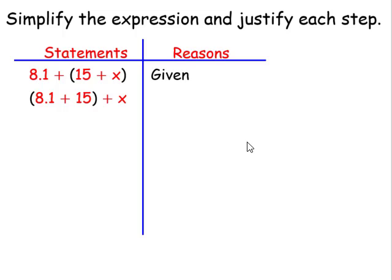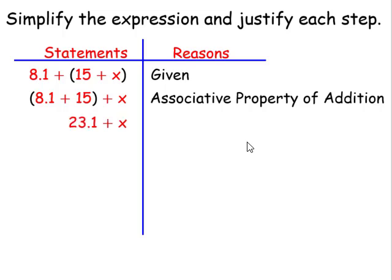Once I slide my parentheses to my left, I have a grouping of 8.1 plus 15. We achieve this by using the associative property of addition. Now all we have to do is add 8.1 plus 15 is 23.1. So we're left with 23.1 plus x.